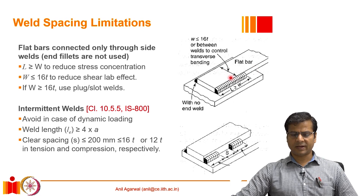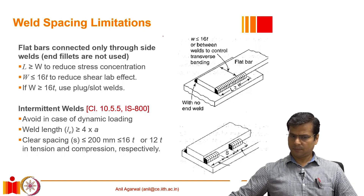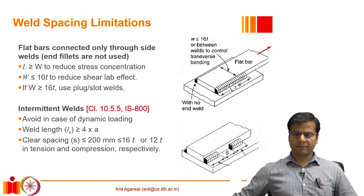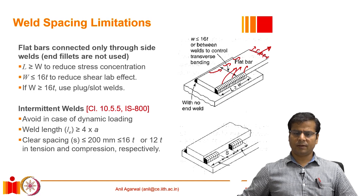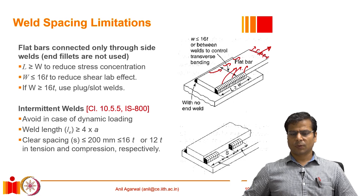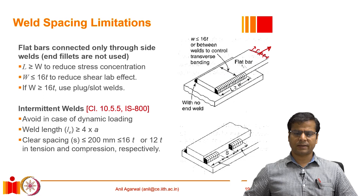What happens if the plate is wider than 16 times its thickness? When the load is applied, there is a very significant shear lag effect. The load is uniformly distributed away from the weld, but as we come closer to the welds, most of the force is transferred from the edges — where the weld is — resulting in very large shear lag that reduces the strength of the connection too much. So we should ensure that width W is not more than 16 times the plate thickness.